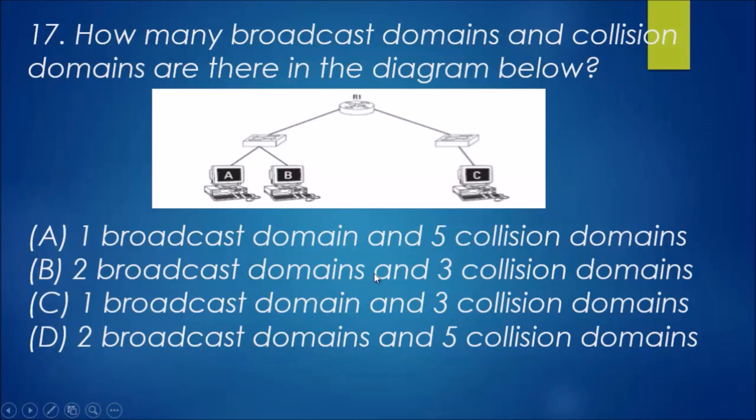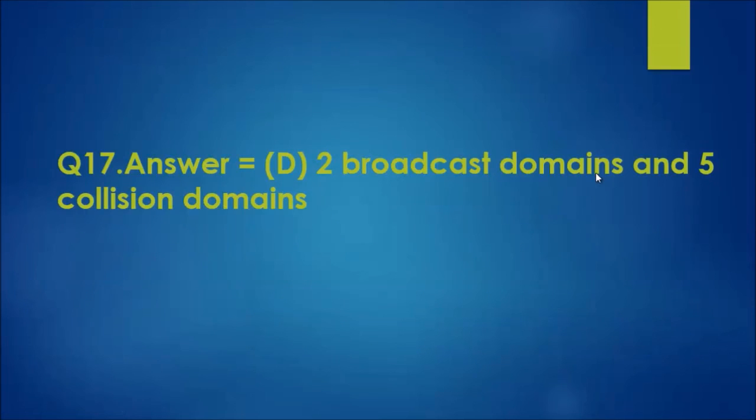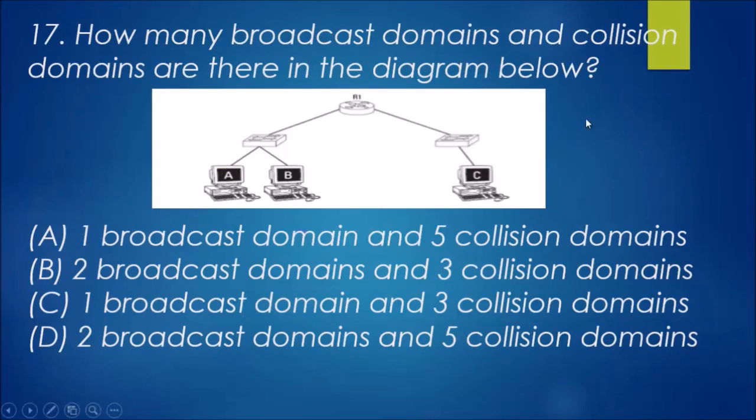Now it's either B or D. The answer is actually D. It also accounts for the switches here and the clients that they have. They've got one, two, three, four, five, which makes the answer D - two broadcast domains and five collision domains. Essentially, broadcast domains are from the router ports and the collision domains are all the ports from the switch including itself with the clients on the end.